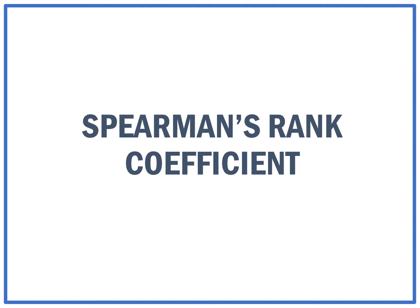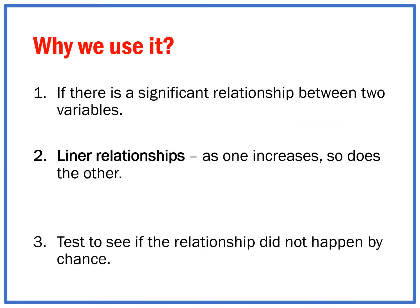In this short video, I'll be showing you when, why, and how you can use the Spearman's rank coefficient. We use the Spearman's rank coefficient as a way of seeing if there's a significant relationship between two variables. Those variables have to be in a linear relationship — as one increases, what does the other one do? We want to test that strength of the relationship to see if it didn't occur by chance.